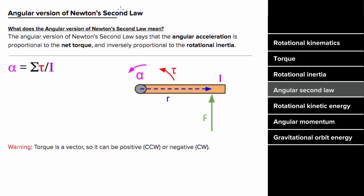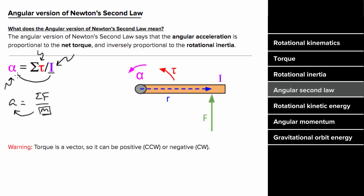What's the angular version of Newton's second law? Newton's second law says acceleration equals net force divided by mass. The angular version says angular acceleration equals net torque divided by rotational inertia. Mass tells you how much an object resists acceleration, and moment of inertia tells you how much an object resists angular acceleration. Just like when you add up force vectors you must be careful with positive and negative signs, the same holds true with torque vectors — treat either counterclockwise or clockwise as positive and be consistent.